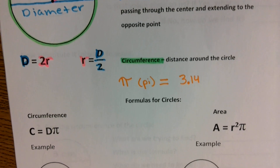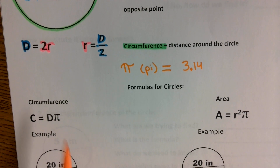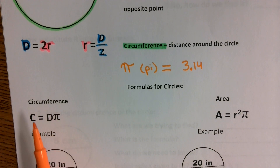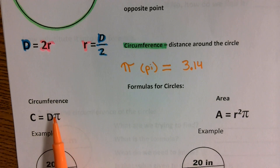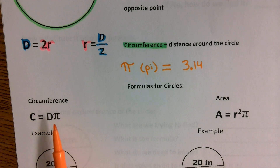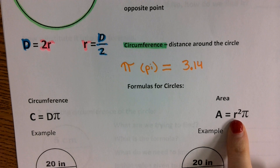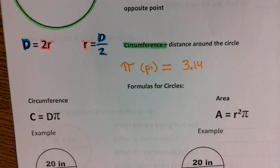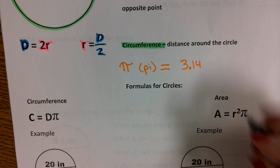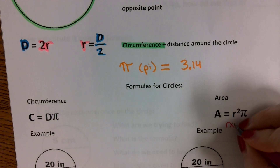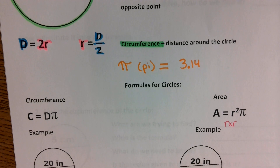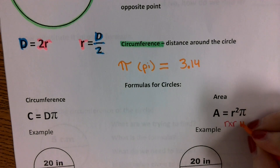Here are our two formulas. Circumference is found by taking the diameter and multiplying it by pi — taking your diameter's measurement and multiplying it by pi. Area is found by taking the radius, squaring it, and multiplying by pi. Right below r squared, write down that this is the same thing as r times r. R squared is the exact same thing as saying r times r, and then we multiply by pi.